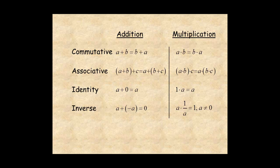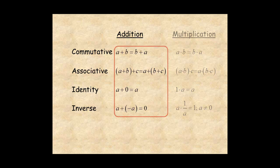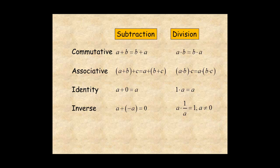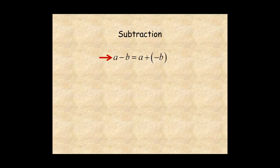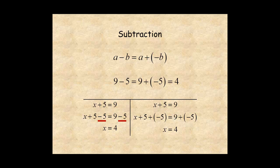Earlier in this lesson, you saw there were versions of these properties for addition and multiplication, but not for subtraction or division. The reason is that subtraction and division are defined using addition and multiplication. Subtraction is defined using addition and the inverse property of addition: A minus B is defined as A plus the inverse of B. For example, nine minus five is nine plus negative five. Notice you've been using this property all along without realizing it — to solve an equation, you can subtract five from both sides or add negative five to both sides. Either way, it's the same.